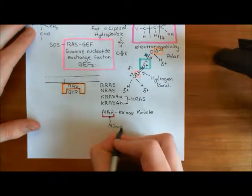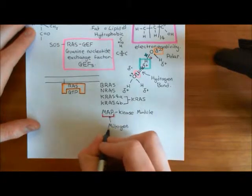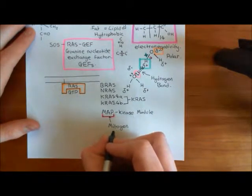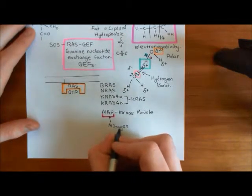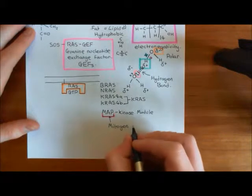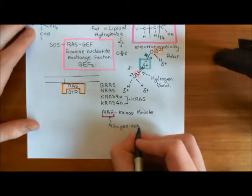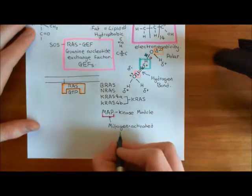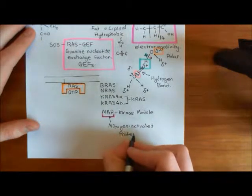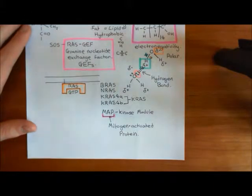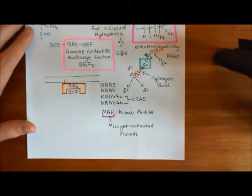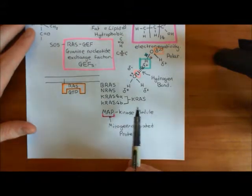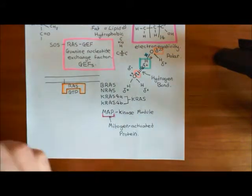The M is for mitogen — a mitogen is any molecule capable of making a cell divide, so it's basically a mitosis-promoting agent. The A is for activated or associated, whichever you prefer. The P is for protein. The key enzyme within this MAP kinase module is the MAP kinase enzyme itself, which we'll come to later. The name for the entire cascade of kinases we're about to study is the MAP kinase module.